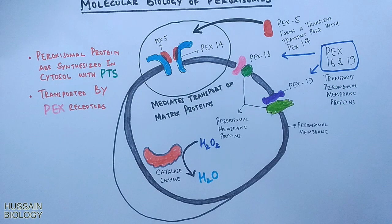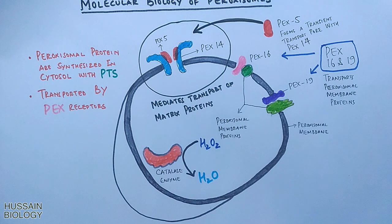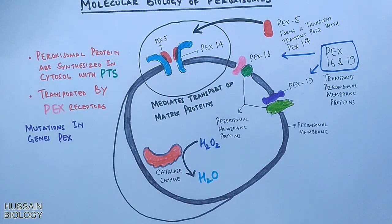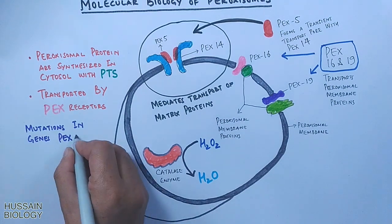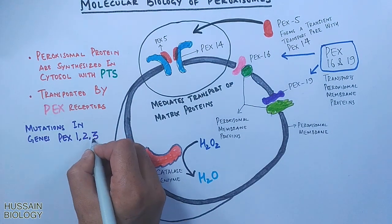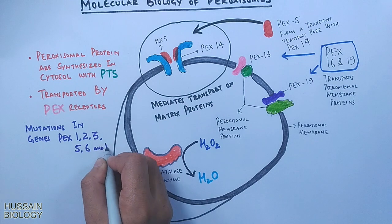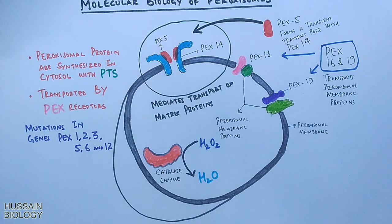Now let's look at peroxisomal disorders. First, mutations in genes encoding PEX1, PEX2, PEX3, PEX5, PEX6, and PEX12 cause Zellweger syndrome, where there are non-functional peroxisomes.